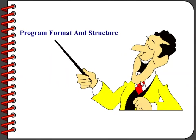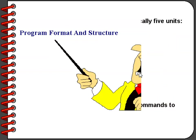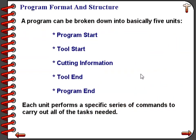Now that we have enough codes to write a complete program, let's see how they are assembled. A complete program can be broken down into five units: program start, which begins a program; tool start, which begins each tool; the cutting information, which is what you create for each machining operation with each tool; tool ending information; and finally, program end.